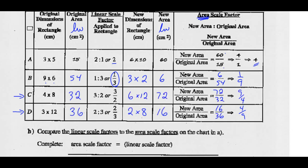For rectangle C, the area would be 4 times 8, or 32 square centimeters. With a scale factor of 3 halves: 4 times 3 halves is 6, and 8 times 3 halves is 12. The new area is 72. So 72 over 32 in lowest terms would be 9 quarters — you can divide both by 8.